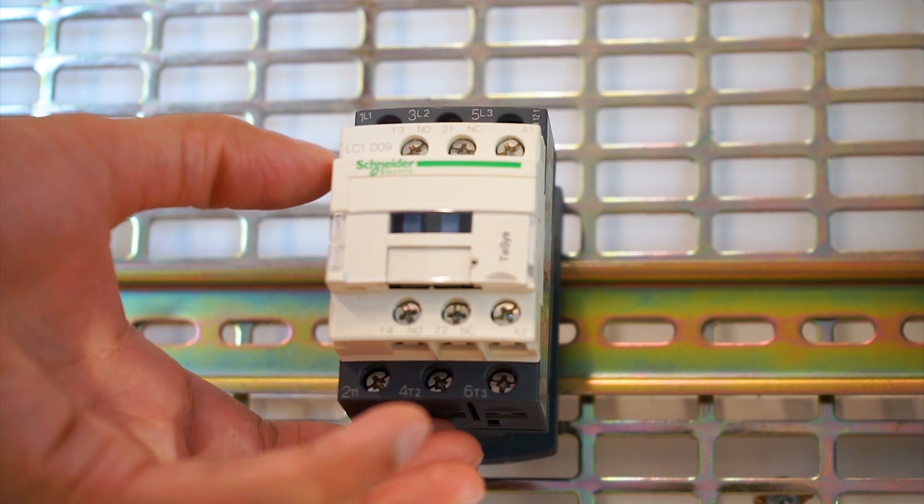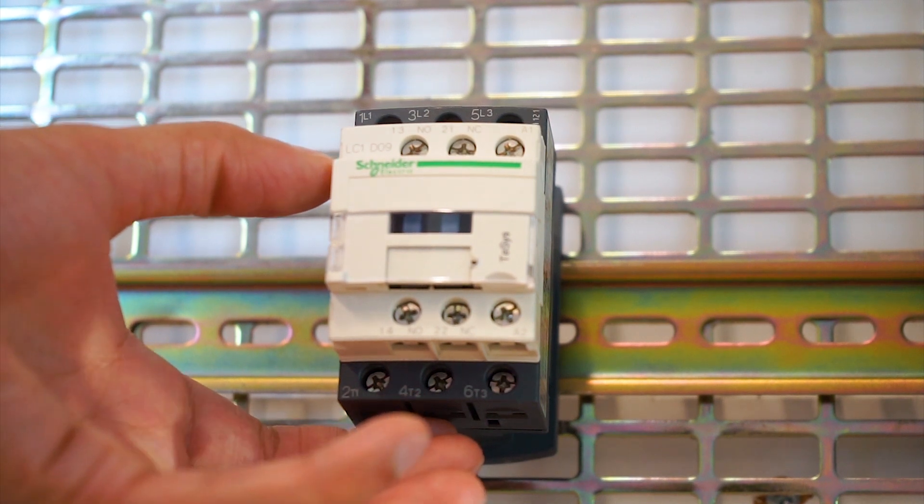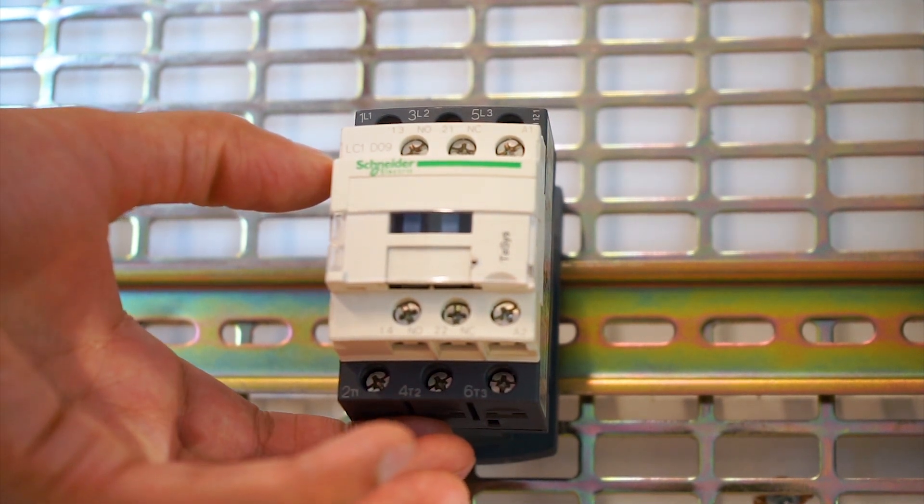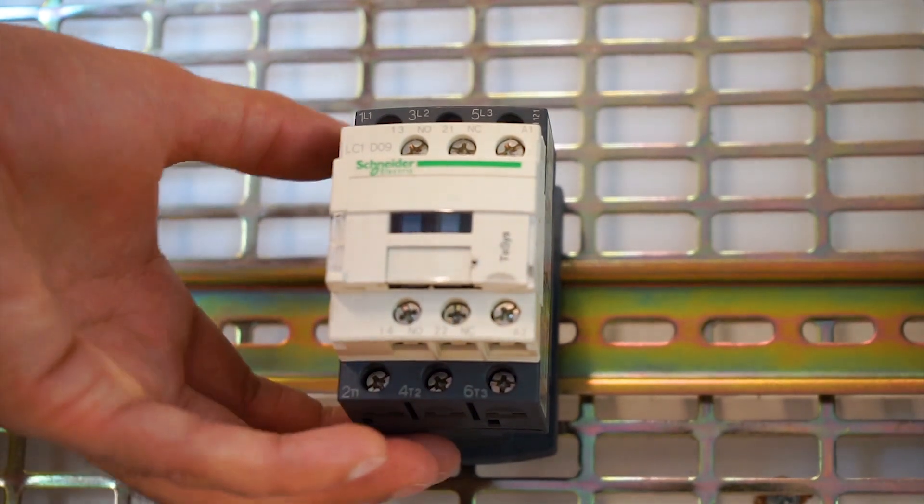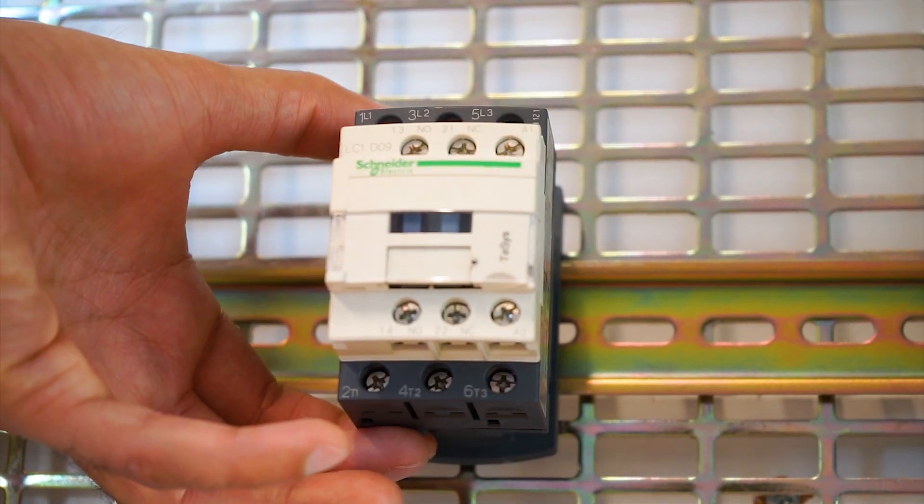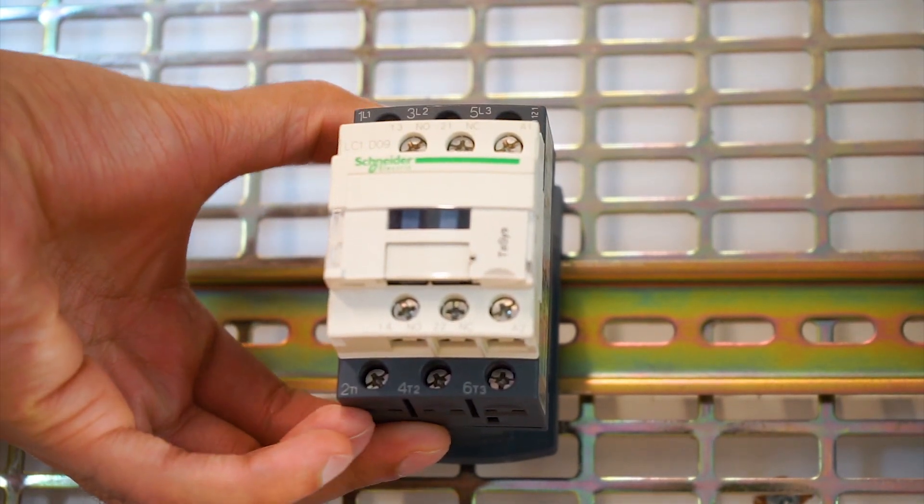Now unfortunately that's not the complete part number and we usually have to find the coil voltage. So to be able to locate the coil voltage, you need to have a top view at the top back end of this contactor.